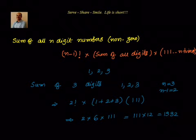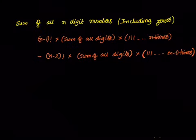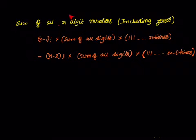This is the example we did in the last session. Now in this session, suppose instead of using only non-zero digits, one of the digits becomes 0. The formula says that sum of all n digit numbers including zeros equals whatever we got earlier — (n-1)! into sum of all digits into 111...n times — minus an adjustment.